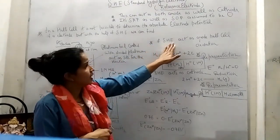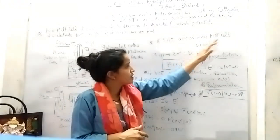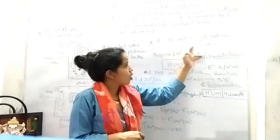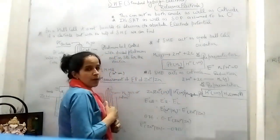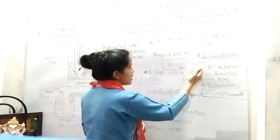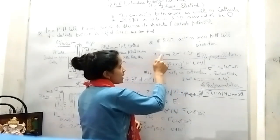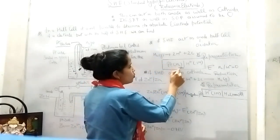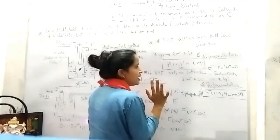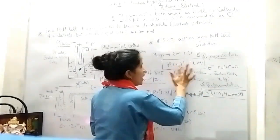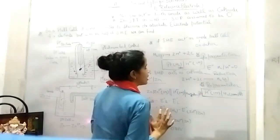If SHE acts as an anode, there is oxidation occurring, means H₂ loses its two electrons to become 2H+. The representation of cell is like that: platinum, hydrogen gas at 1 atm on platinum, slash H+ of one molarity. And the E anode value of H₂/H+ is zero.